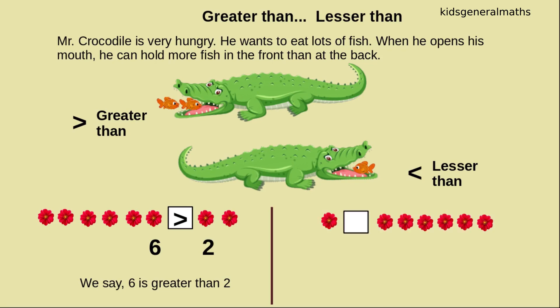One, two. How many flowers? Two flowers. One, two, three, four, five, six. How many flowers? Six flowers. While comparing these two numbers, which number is greater? Yes, six is greater. So the crocodile will open the mouth towards six. So we will say two is less than six.